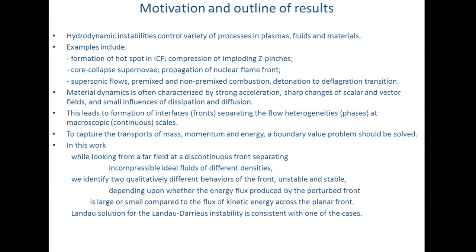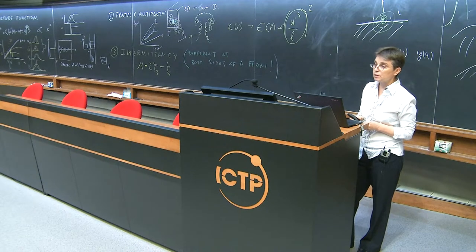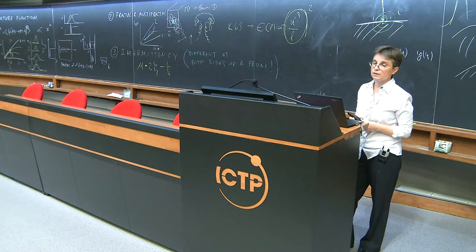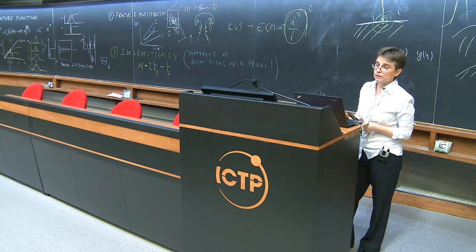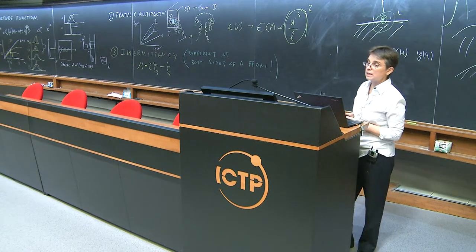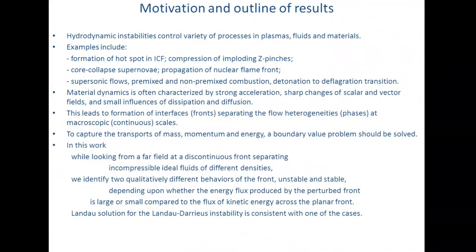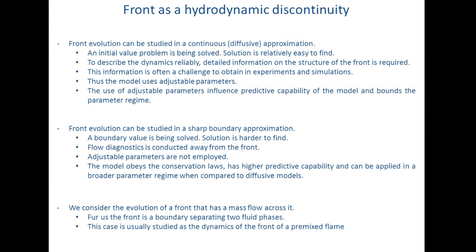To capture the transport of mass, momentum and energy, a boundary value problem should be solved. In this work, while working in a far-field approximation and looking at the field separating incompressible ideal fluids of different densities, we identify two quantitatively different behaviors of the front — stable and unstable — depending upon whether the energy flux produced by the perturbed front is large or small compared to the flux of kinetic energy across the planar front. Our solution for the Landau-Darrieus instability is consistent with one of these cases.